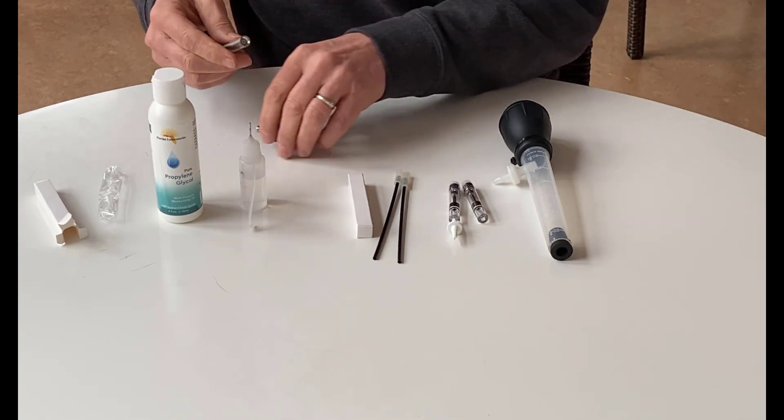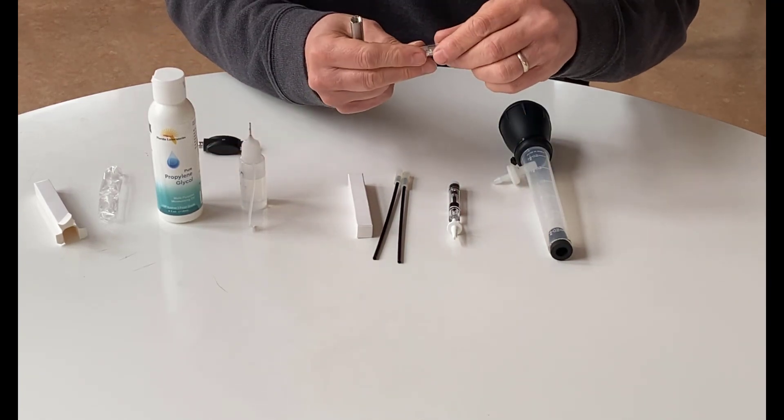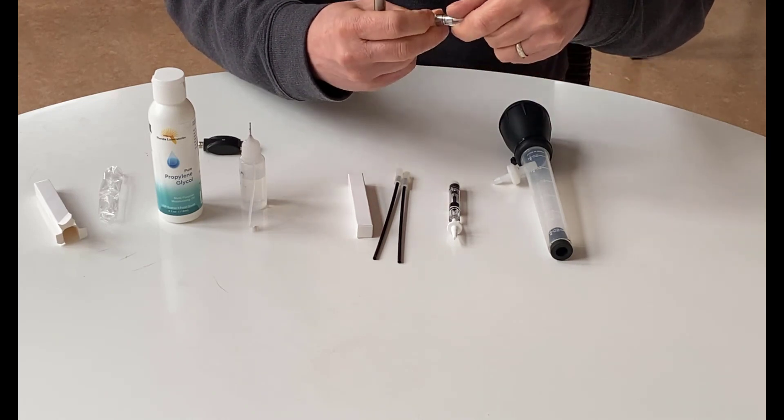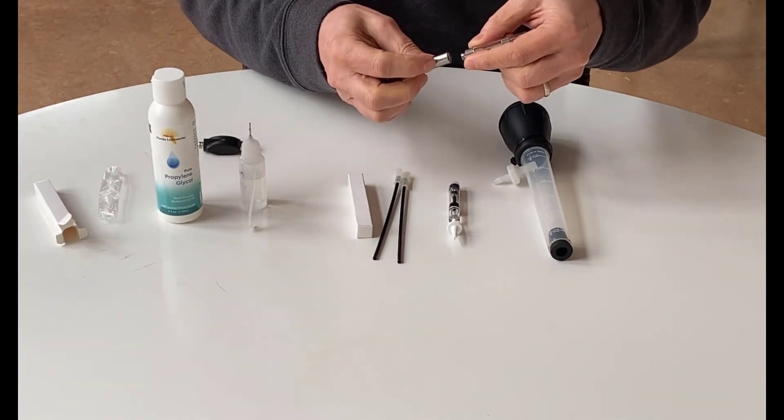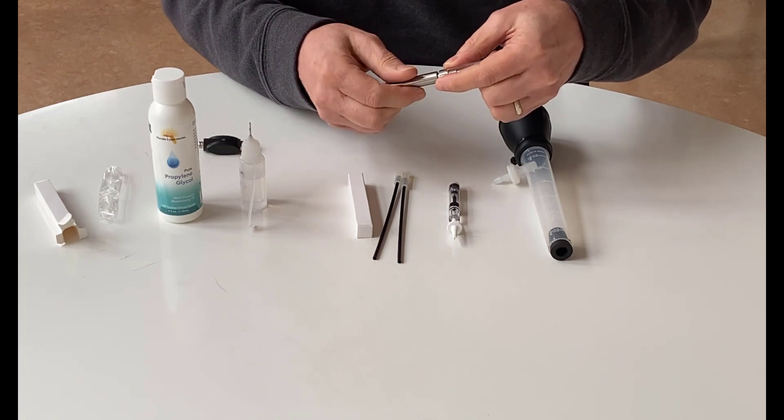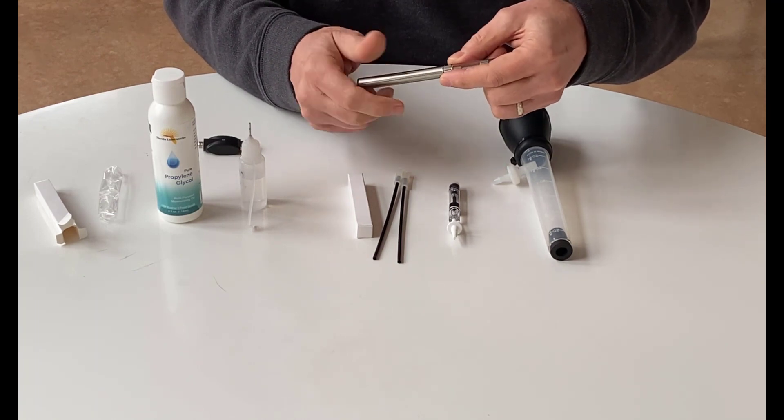You take it off, and then this is one of the cartridges. It might have this little silicone rubber tip on it that you can throw away, and then you thread the battery onto the cartridge.